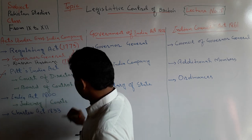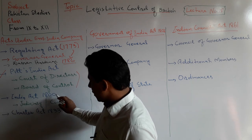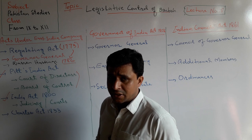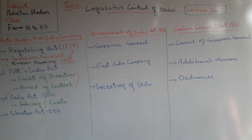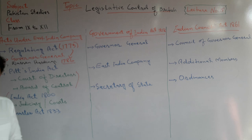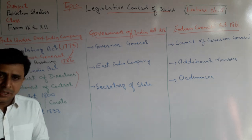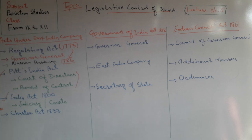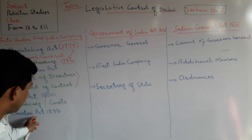According to India Act 1800, the East India Company started forming courts and a judiciary in Madras, Bombay, and Calcutta. Three courts were established. According to the Charter Act 1833, the British indirectly started ruling over India.